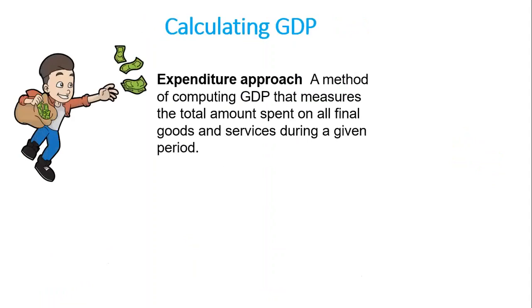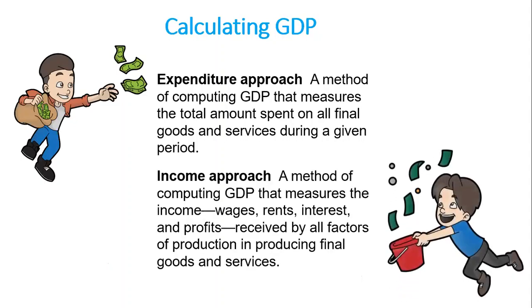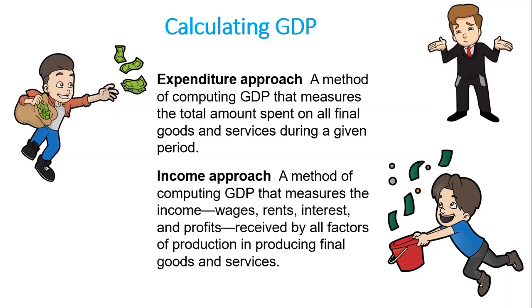Now, to calculate GDP we have two main approaches. The first is the expenditure approach, and the second involves computing GDP by measuring the total amount of income — wages, rents, interest, and profit — received by all factors of production in producing final goods and services.